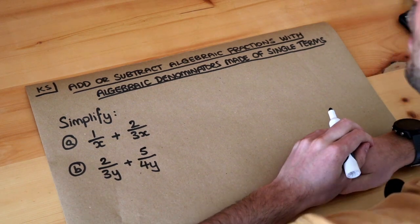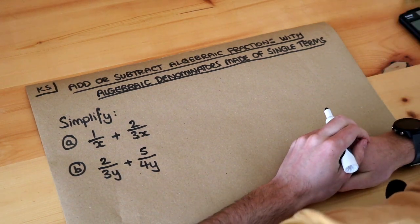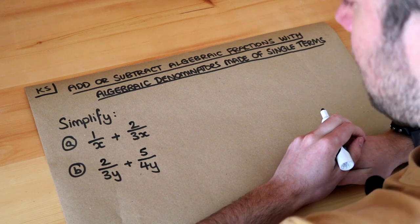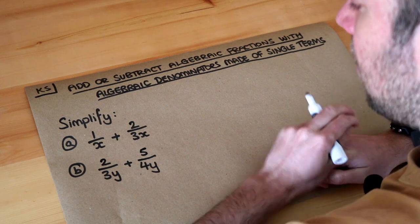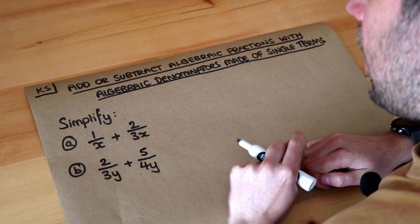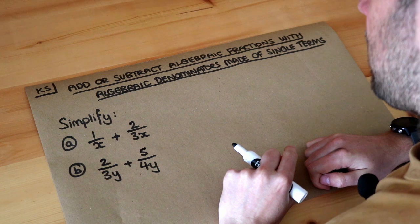Hello and welcome to this Dr. Ross Mass's key skill video on adding or subtracting algebraic fractions with algebraic denominators made of single terms. We're adding algebraic fractions but they're relatively simple because we only have a single algebraic term in the denominators.